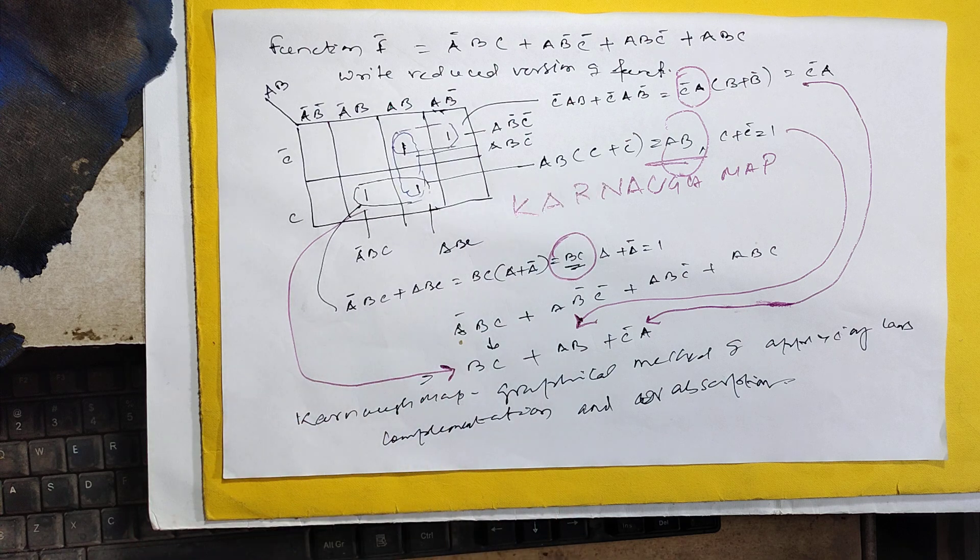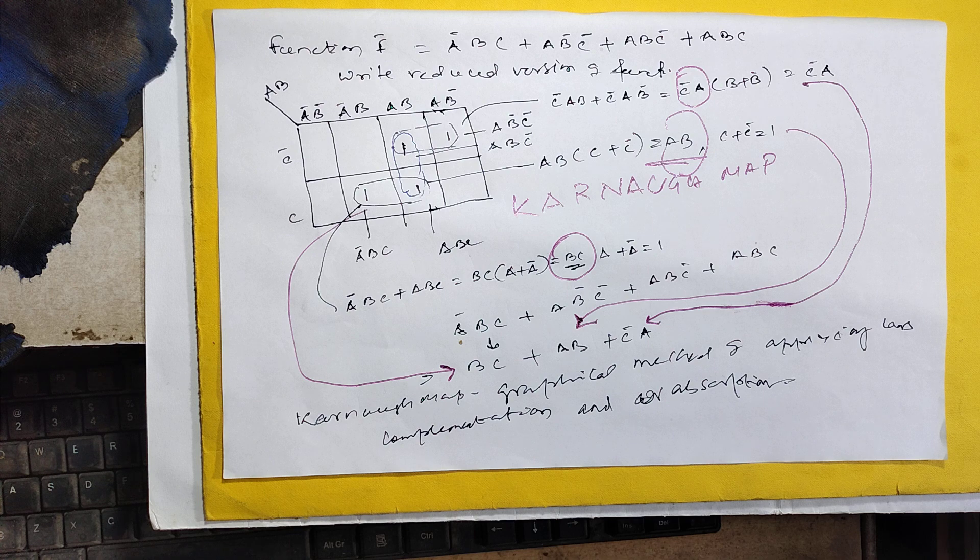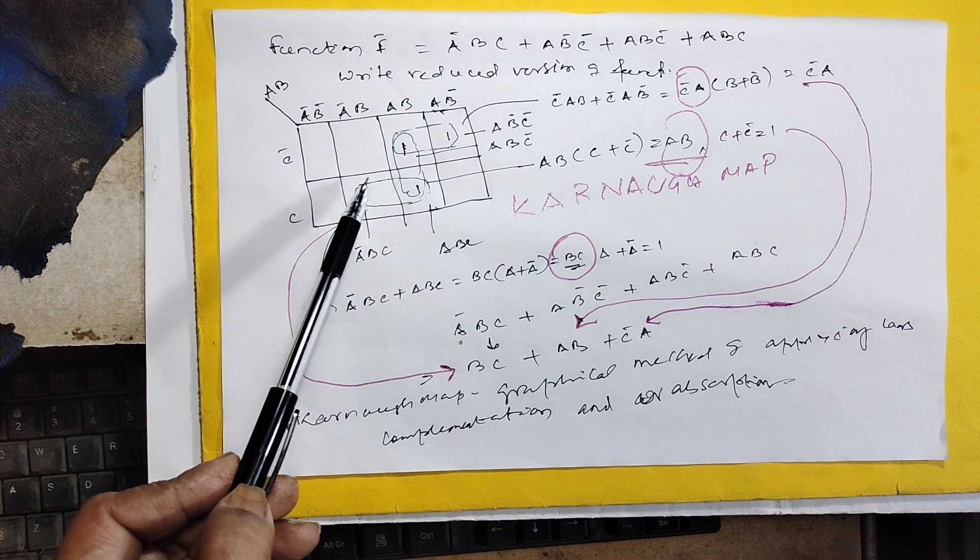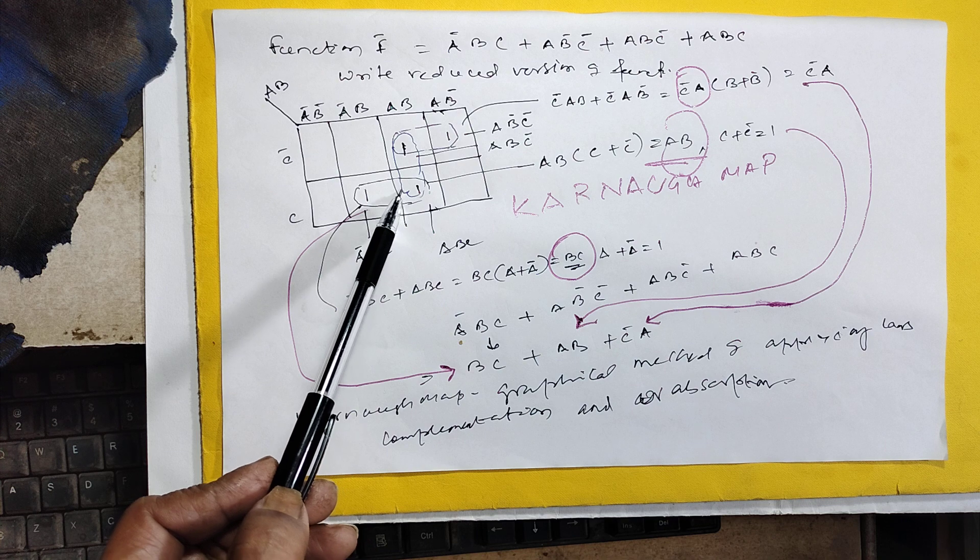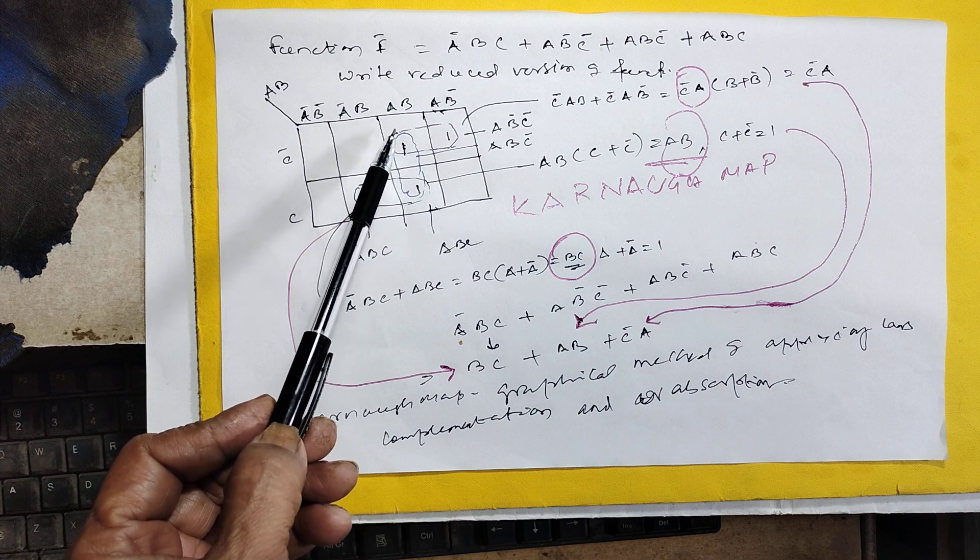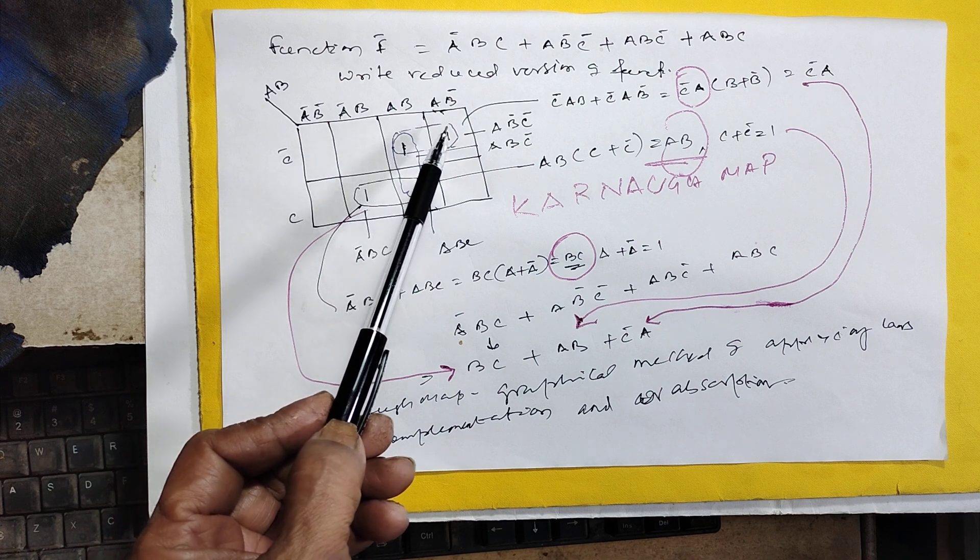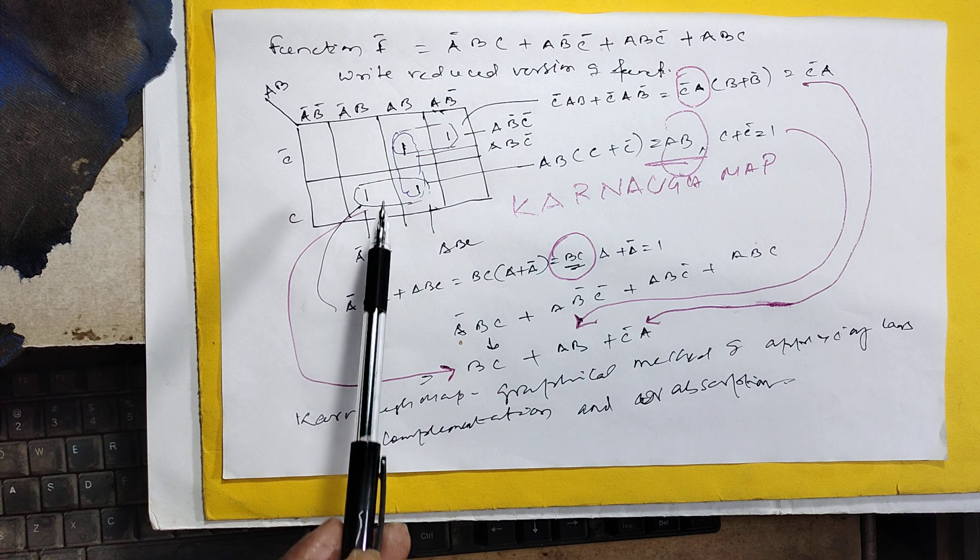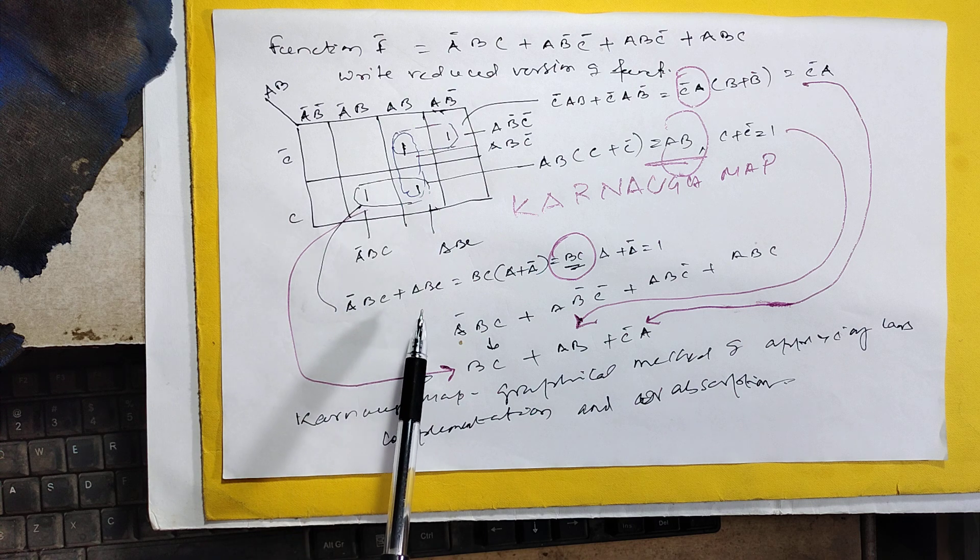Now we have to arrange these. These two can be connected, these two can be connected. If these two are connected, this is a'bc and abc, which equals bc. a + a' = 1, so it is bc.